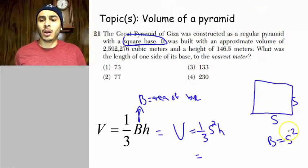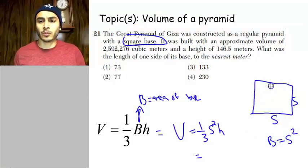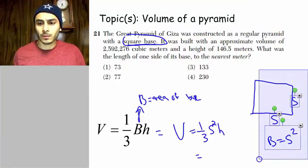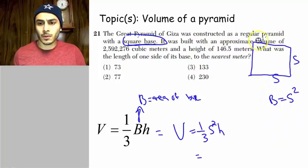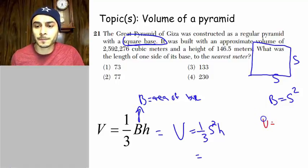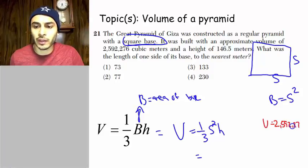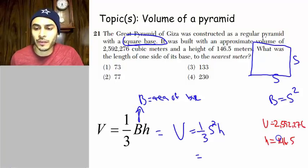All right, so what are we given here? Let's get this out the way just to make some room. Okay, so what are we given? Well, we are told that the volume is 2,592,276 and we're told that the height is 146.5.